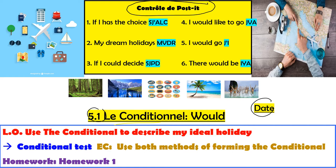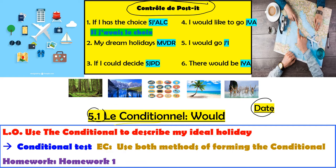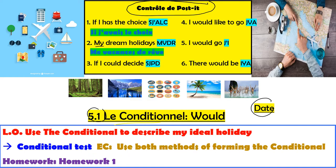Donc, le premier — 'if I had the chance' — c'est si j'avais le choix. Voilà, 'if I had the choice.' Alors, numéro deux — 'my dream holidays' — you say in French 'my holidays of dream.' Holidays are always plural, so think about this all the time. If it's 'my', you need the plural form — mes vacances de rêve.